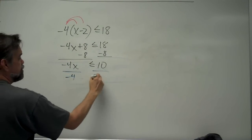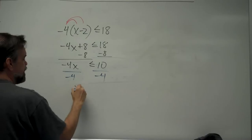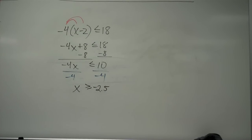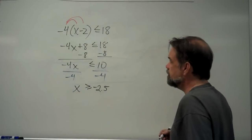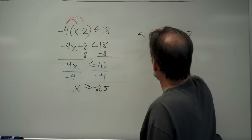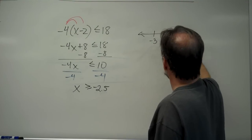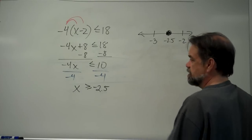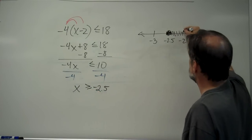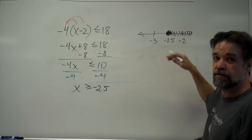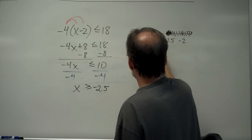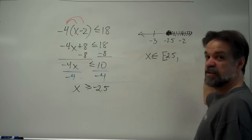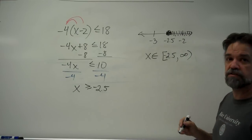So the rule is: any time you have an inequality and you multiply or divide by a negative, you change the direction of the inequality. Back to our problem, divide both sides by −4 and flip the sign: x ≥ −2.5. On the number line, put −3, −2.5, −2, draw a circle around −2.5, fill it in because there's an 'or equal to,' and shade to the right. In interval notation: x ∈ [−2.5, ∞).